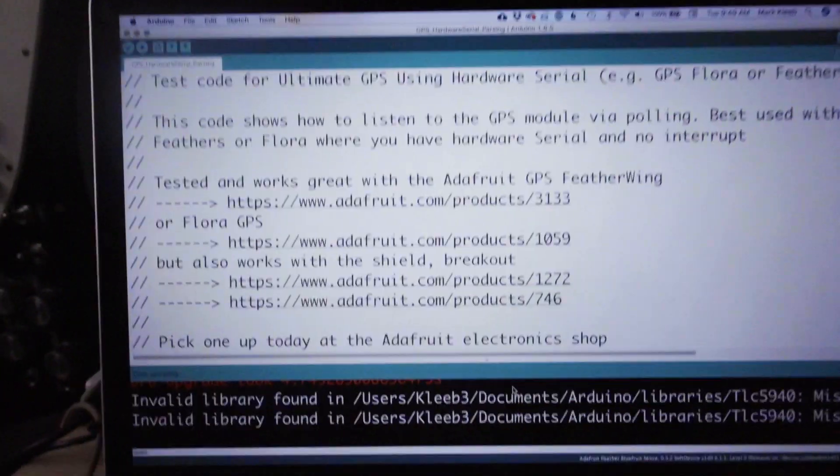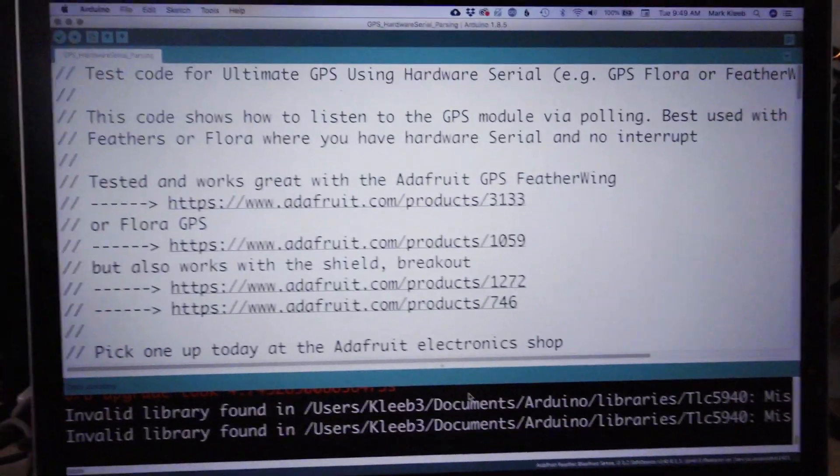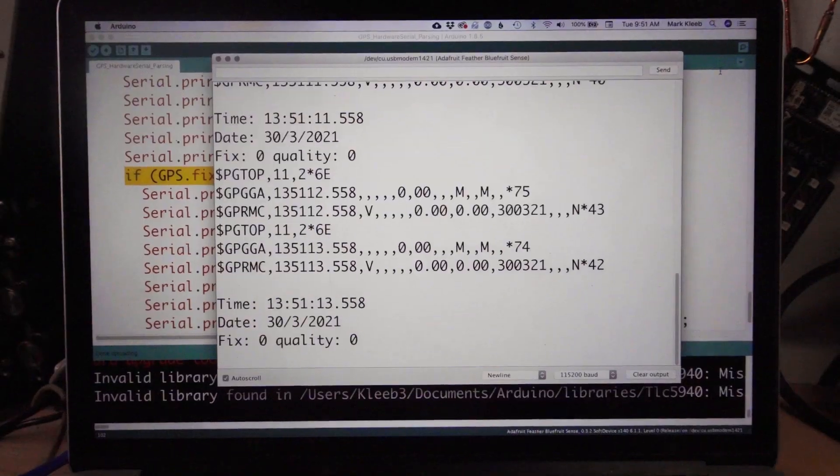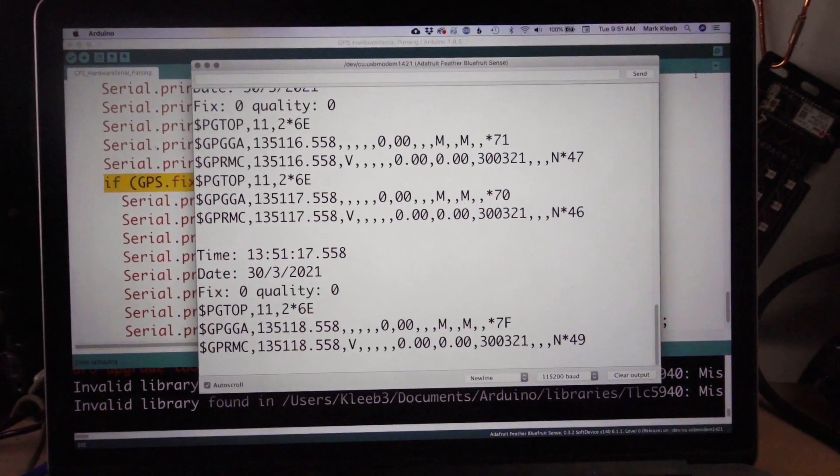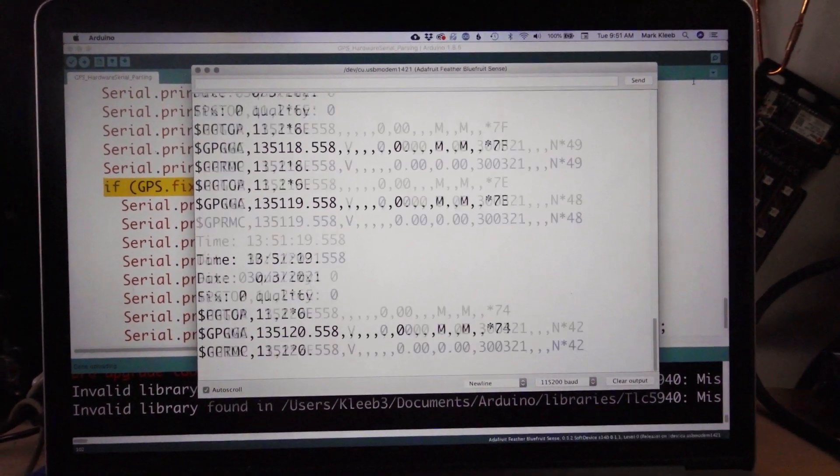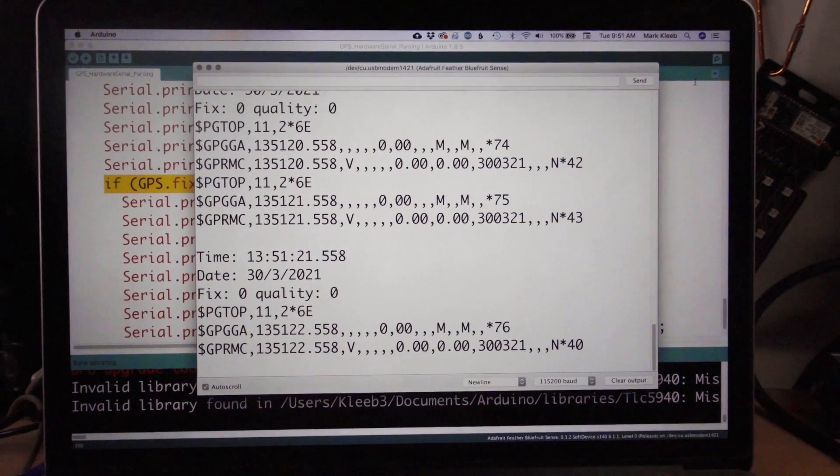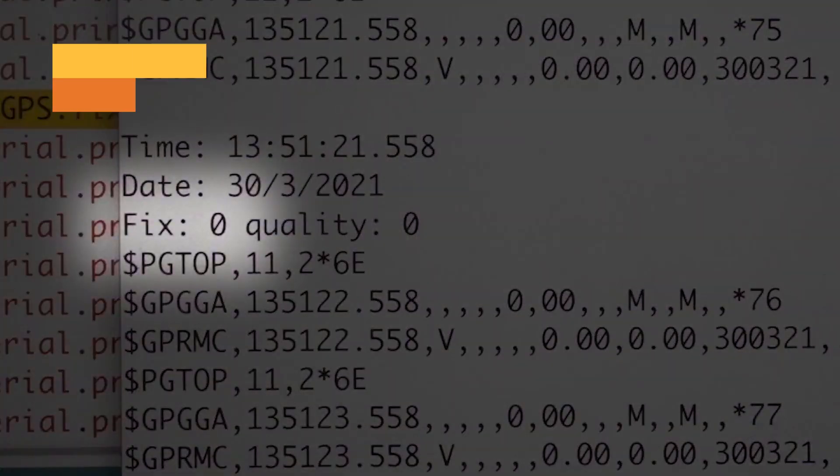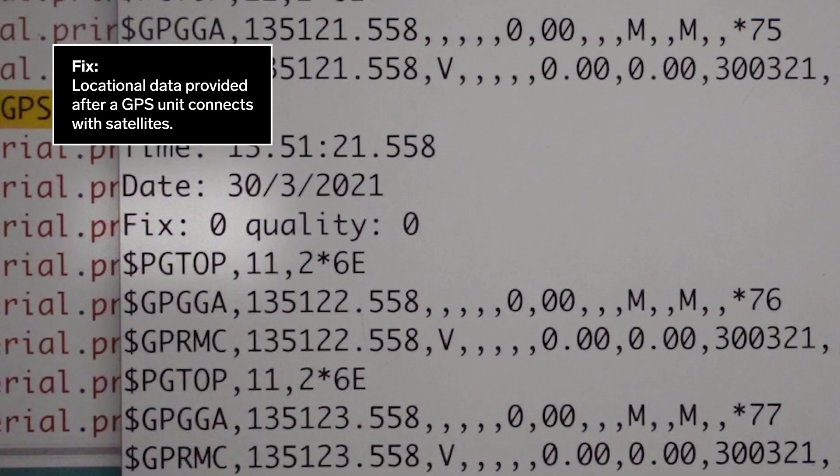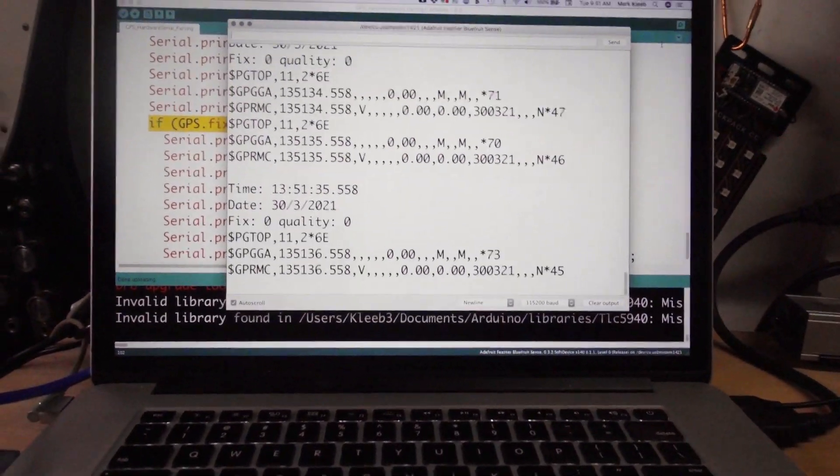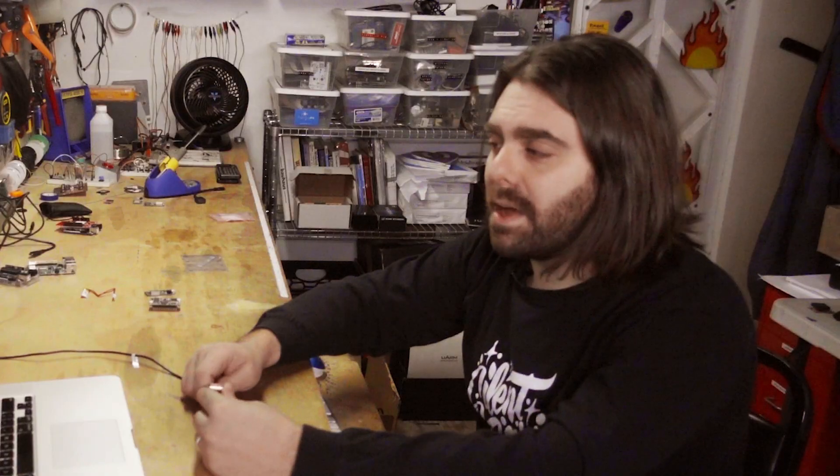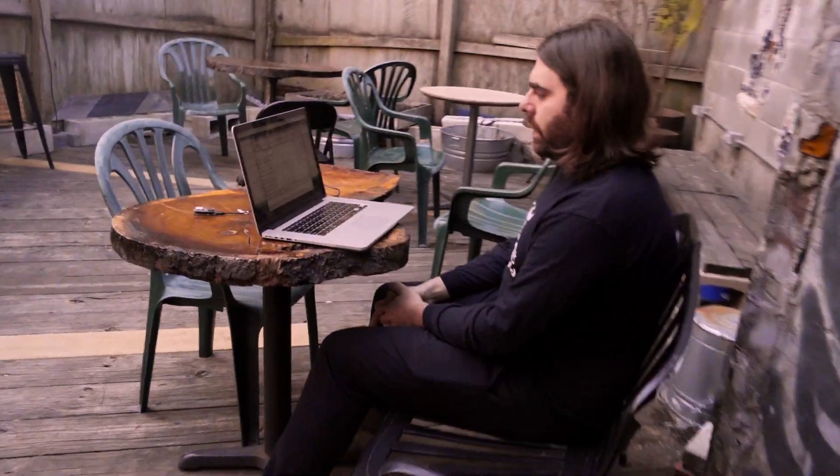So I plugged in the GPS module, and I brought up some example code from Adafruit on parsing serial data. So I get the time, I get the date, and it's accurate, right? However, I'm not seeing latitude and longitude because I have fix zero. I'm not getting a fix. And that's probably because I'm in this windowless box where I don't have any access to a satellite.